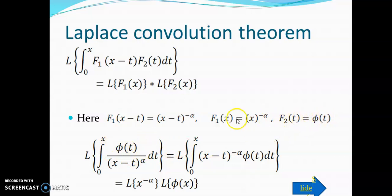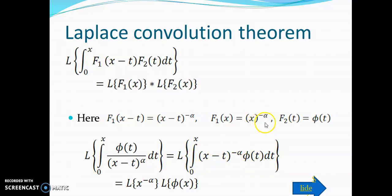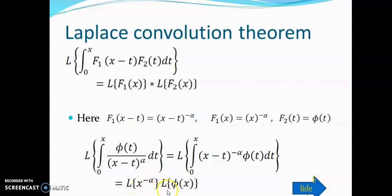Using the Laplace convolution theorem, we rewrite the right-hand side as the Laplace transform of the integral from 0 to x of (x minus t)^{-α} φ(t) dt, where f1(x minus t) = (x minus t)^{-α} and f2(t) = φ(t). By the theorem, this equals Laplace transform of x^{-α} multiplied by Laplace transform of φ(x).